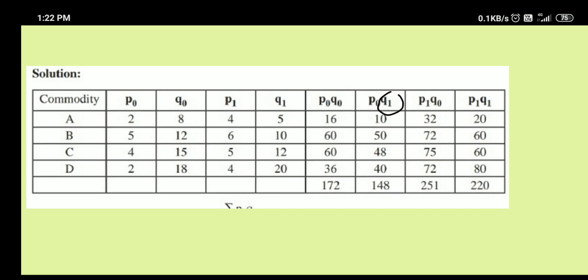This is nothing but the multiplication between P0 and Q0. In the first case, you can see P0 is 2 and Q0 is 8. That is 2 into 8, 16. On the other hand, 5 into 12, 60. 4 into 15, 60. 2 into 18, 36.